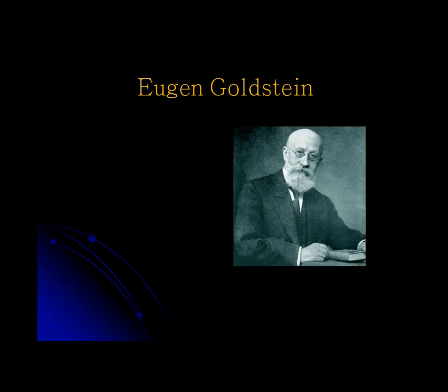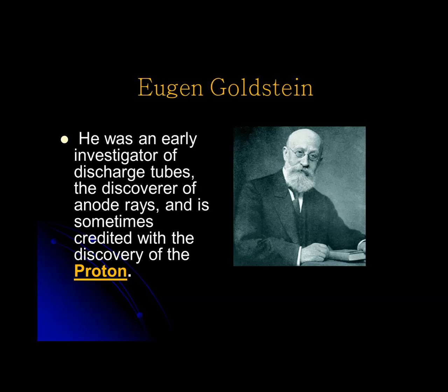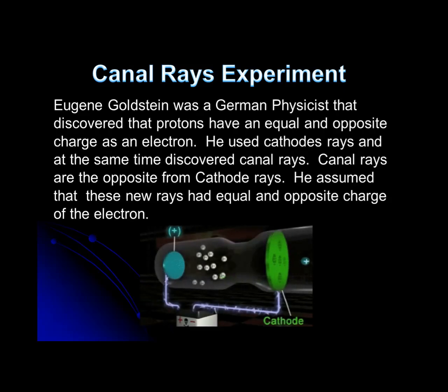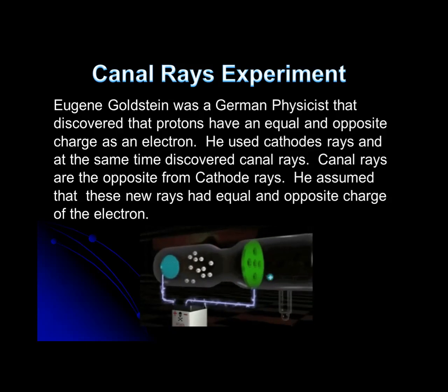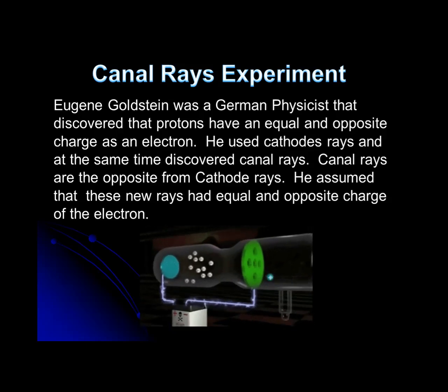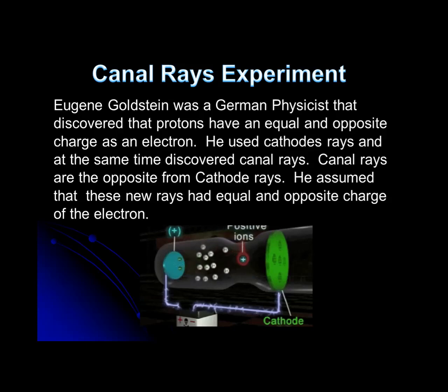Then came Eugene Goldstein. He was an early investigator of discharge tubes, the discoverer of anode rays, and is sometimes credited with the discovery of the proton. For the first time, he discovered positive rays in any atom. He performed the canal rays experiment. He was the German physicist who discovered that protons have an equal and opposite charge to an electron. He used cathode rays and at the same time discovered canal rays, which are opposite from cathode rays.